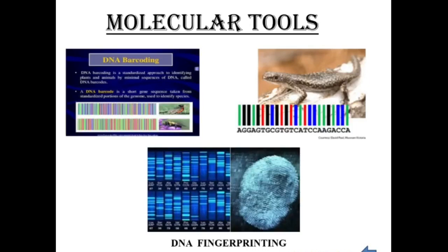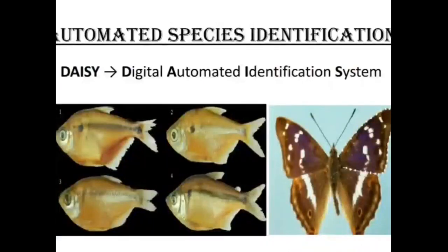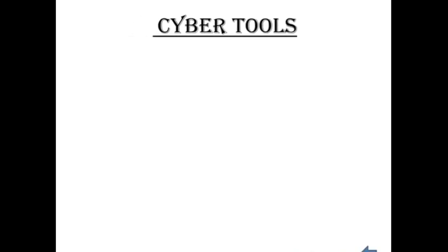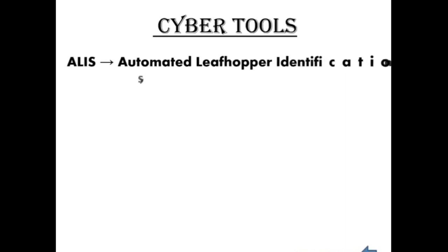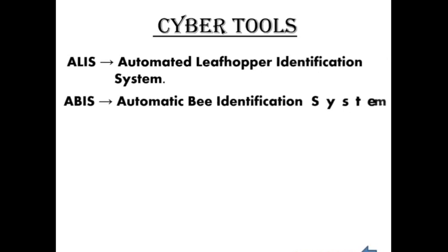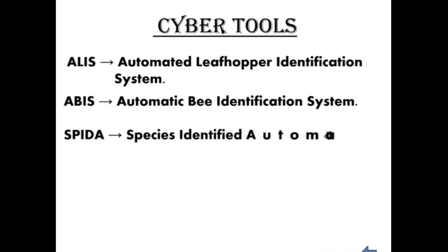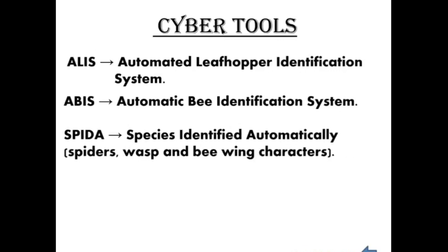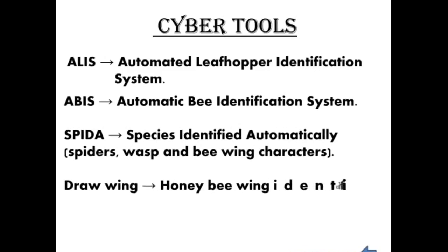Next is automated species identification tools. For example, DAISY — Digital Automated Identification System. These are cyber tools. Examples include: ALIS — Automated Leafhopper Identification System; ABIS — Automated Bee Identification System. These tools speed up species identification automatically. Examples of characters used include spider, wasp, bee, and wing characters. Another cyber tool is drawing, used for handy viewing.